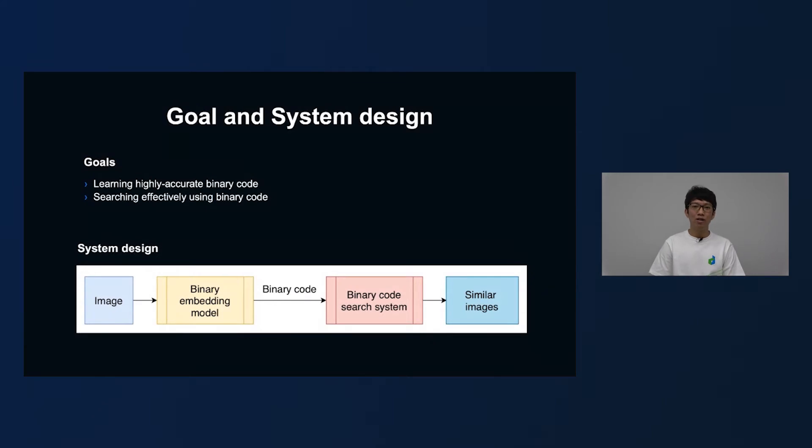So there are two goals of this project. First, we build a model which embeds image into highly accurate binary codes. And secondly, using binary codes to build an effective search system. The system design is shown in the figure. First image will go through the binary embedding model to obtain the binary codes representing the image. And then binary codes will be passed to the binary code search system to obtain similar images. So the rest of the talk focuses on two things. First, binary embedding model. And the second thing is the binary code search system.